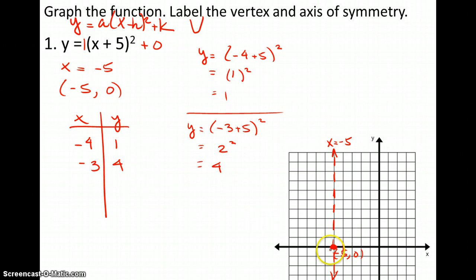So let's plot those points. So negative 4, 1. And then I could also reflect it. So now I have 3 of my 5 points, because if it's here, then it's also the same distance away. And then negative 3, 1, 2, 3, 4. And then I'm going to reflect that one also.